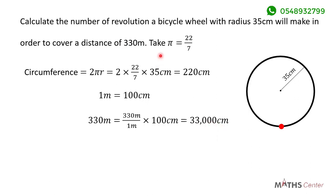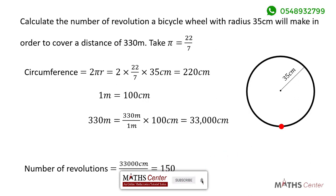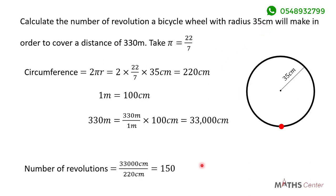To get the number of revolutions needed for the wheel to cover a distance of 330 meters, we divide 33,000 centimeters by the circumference of 220 centimeters. This gives us 150. The wheel of the bicycle, which has a radius of 35 centimeters, will have to go through 150 revolutions in order to cover a distance of 330 meters.